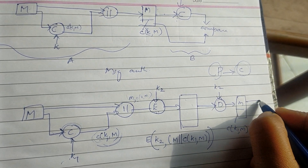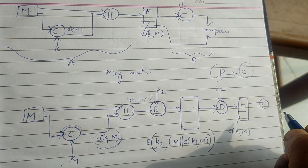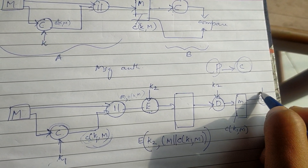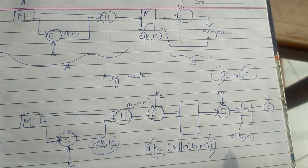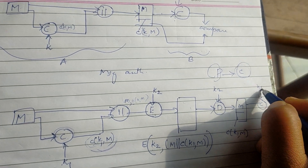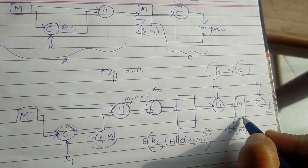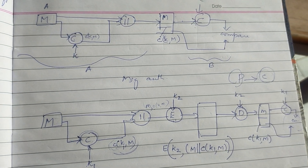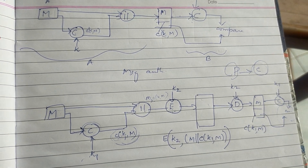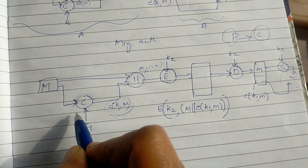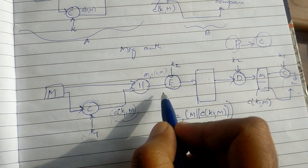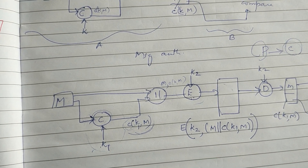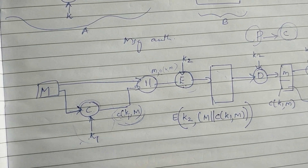Now let us compare: we generate the MAC function from the message. We compare the recalculated MAC with the received MAC — if they match, the message has not been altered. So we have authentication with confidentiality: MAC function provides authentication, encryption provides confidentiality.